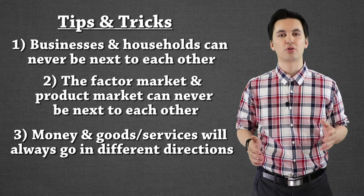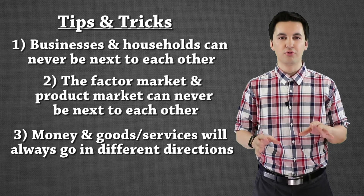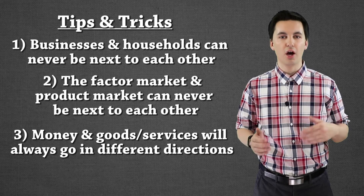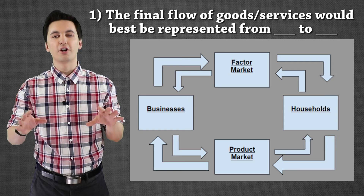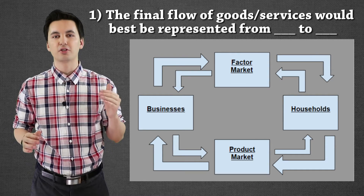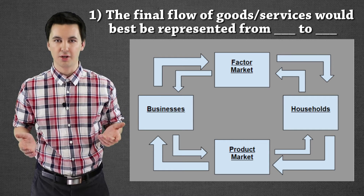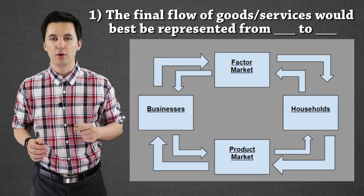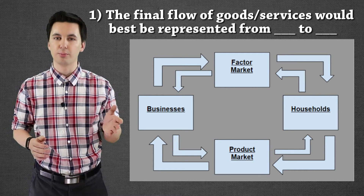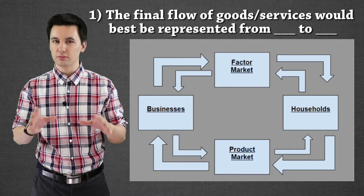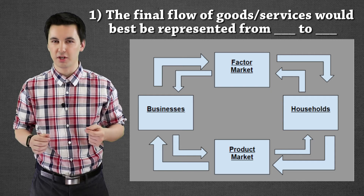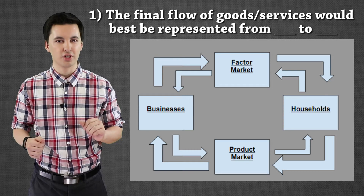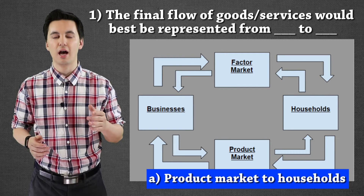Now I want you to try and solve some of these problems. If you're using the guided notes, pause the video right now and go through the problems. Once you're done, unpause the video and we'll go over them together. We're going to start off a little bit easier. We can see our factor market, product market, businesses, and households are all marked on this model, but the arrows are blank. The first statement: the final flow of goods and services would be represented from blank to where? The answer is going to be from our product market to households.